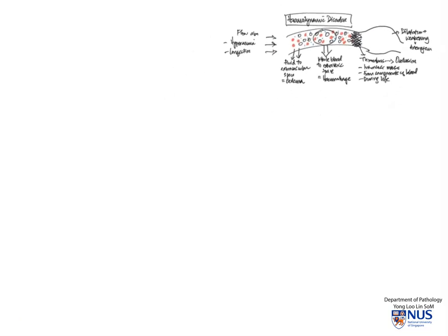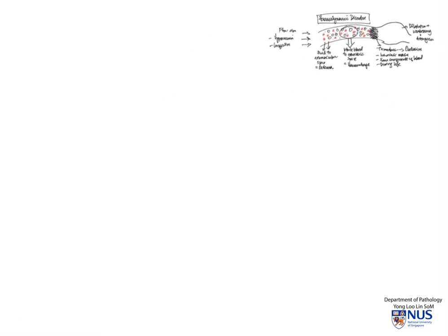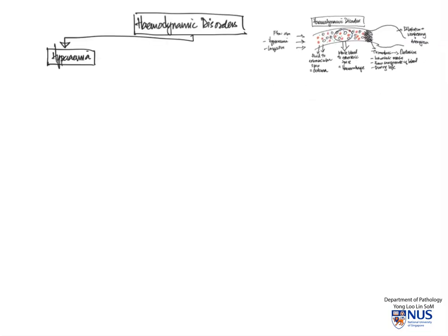So having a visual guide of what can go wrong with blood vessels, now let's look at some of the major hemodynamic disorders. And we're going to look at abnormalities of flow first. So hyperemia, as mentioned earlier, this can be an active process or a passive process.